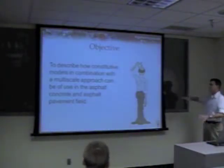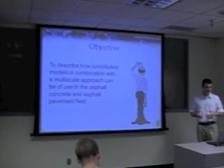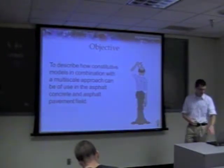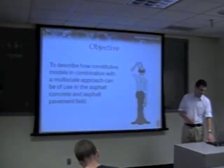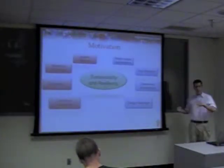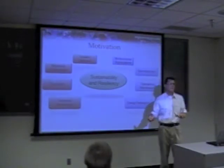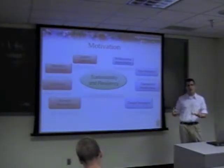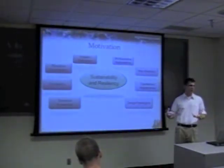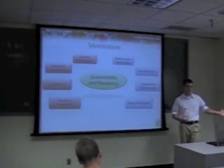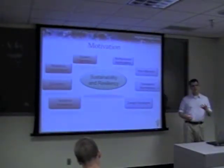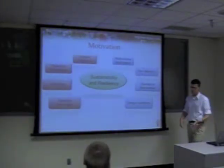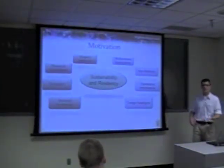Starting with the objective: today it's about describing constitutive models and how we combine those with multiscale approaches to do something useful for asphalt concrete and asphalt pavement building. One way to frame this work is in terms of sustainability and resilience — a very broad context — but really what we're talking about with pavements is maximizing the value of the pavement structure: increased performance, lower cost, and maximizing available materials to meet design objectives. Certain hurdles hinder us from doing this efficiently.